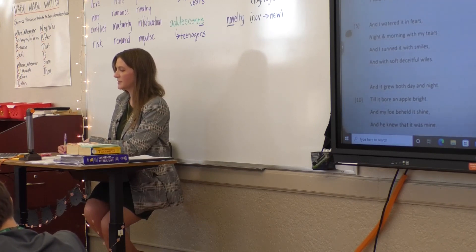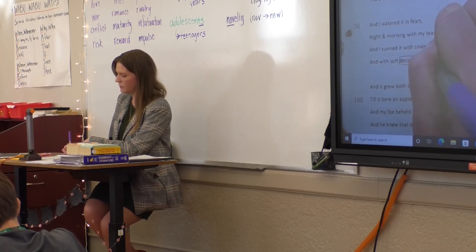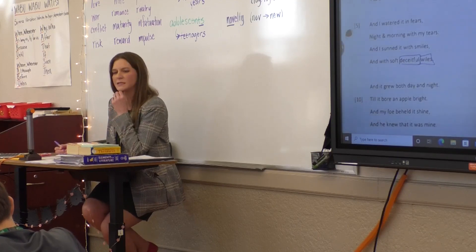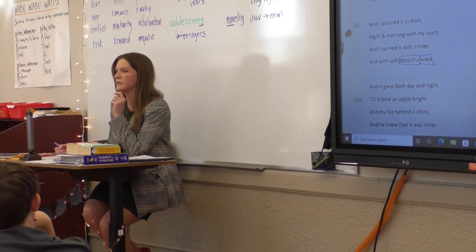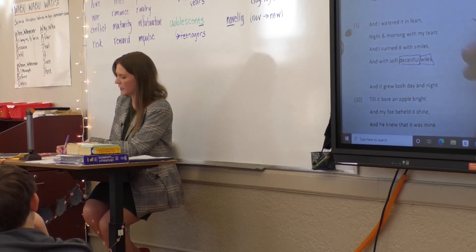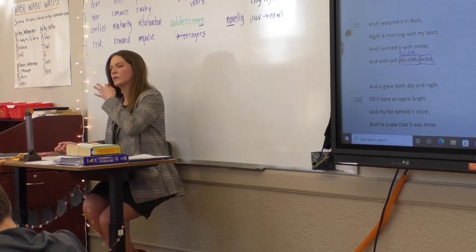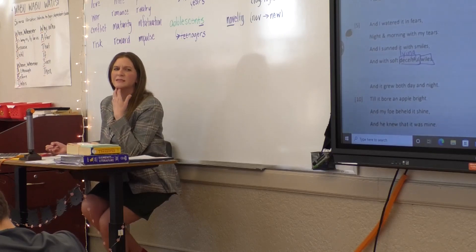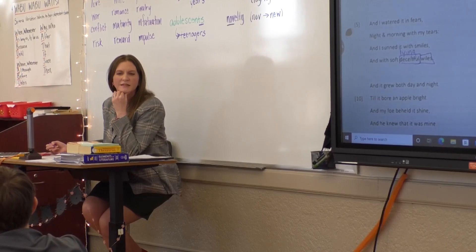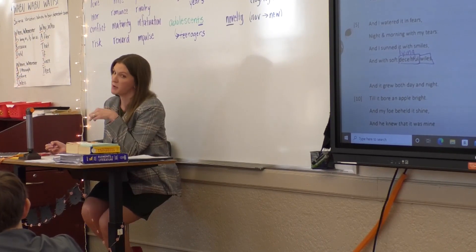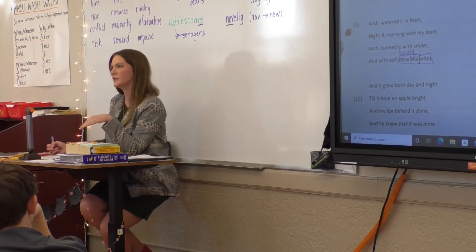Let's go to our second stanza, line eight. We have the words "deceitful" and "wiles." Does anybody know what deceitful means? If you're deceitful with someone, you're lying — you're not being truthful, right? So for deceitful, we're going to say "lying." What about "wiles"? Does anybody know what that is?